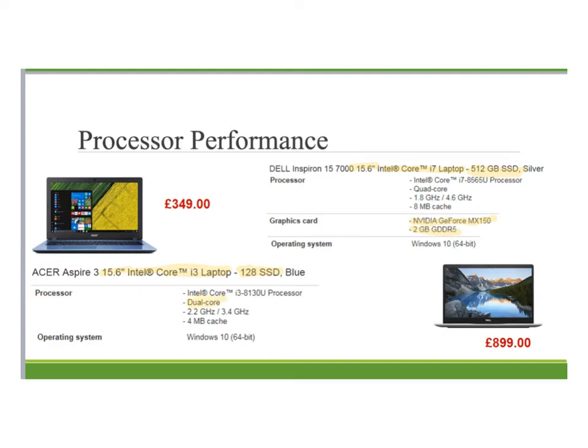We've got a dual core processor here and a quad core processor here. Dual means two, so we have two cores for this processor, and for the Dell we have a quad core processor which has four cores. I will go on to describe what this actually means. In this Acer processor it's 2.2 gigahertz stroke 3.4 gigahertz — this is the clock speed — and again we will talk about what this means.